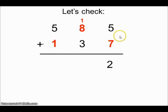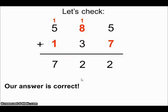5 plus 7 equals 12, I write 2 here and 1 here. 1 plus 8 plus 3 equals 12, 2 here and 1 here. 1 plus 5 plus 1 equals 7. Our answer is correct.